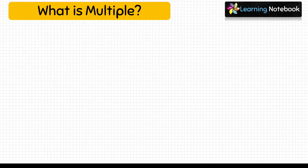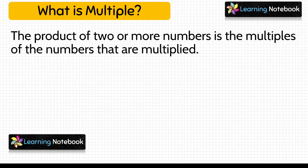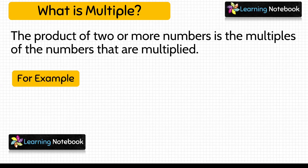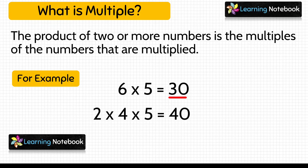So let's start and first understand what is a multiple. The product of two or more numbers is the multiple of the numbers that are being multiplied. Let's understand it with an example: 6 multiplied by 5 equals 30. So here the product 30 is the multiple of 6 and it is also the multiple of 5.